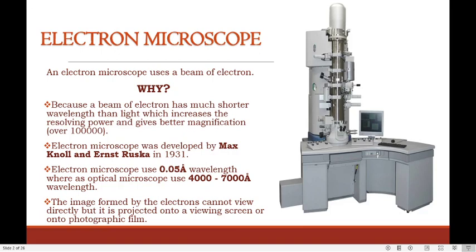Prokaryotes can be observed by light microscopy, but because they are usually 1 to 2 micron meters in diameter, just their general shape and major morphological features are visible. Therefore, to study the detailed internal structure of microorganisms, electron microscopy technique is used. These are also used extensively in current microbiological research.